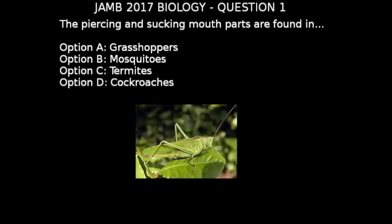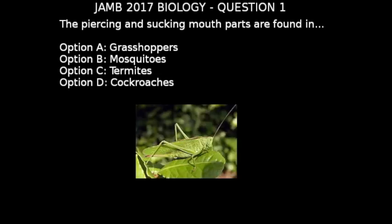Option A is grasshoppers. Grasshoppers generally feed on leaves and grasses, therefore they need mouthparts adapted to bite and chew these leaves. So option A is not our answer.